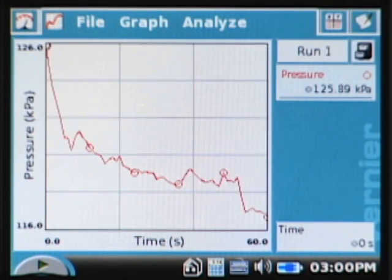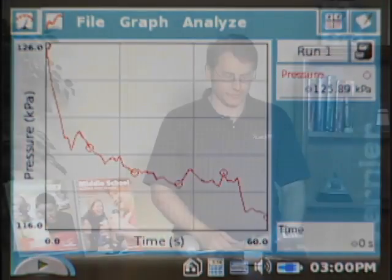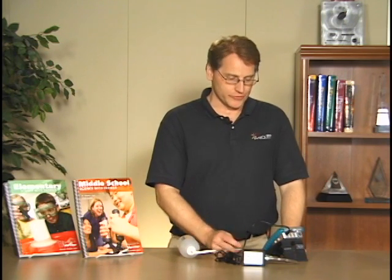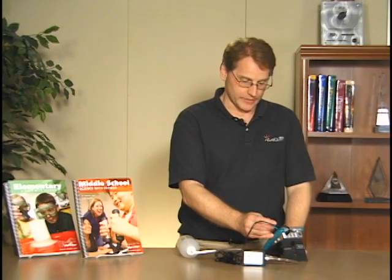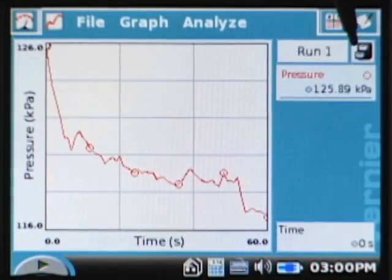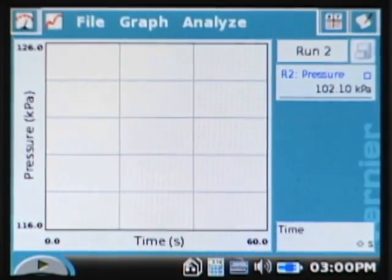Okay, when I'm done, the LabQuest auto-scales the graph, so it just kind of changes the scale so that we can observe the graph in a little greater detail. Now I'm going to switch hands and use my left hand, but I want to keep my first run, so I'm going to go over and tap on the store button right here—there's the little filing cabinet—so that allows me to store the run.